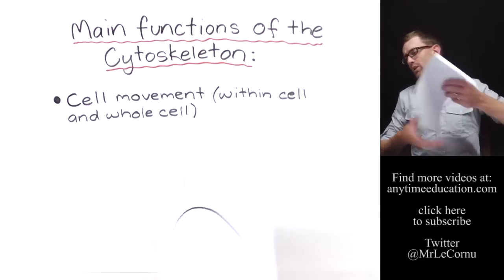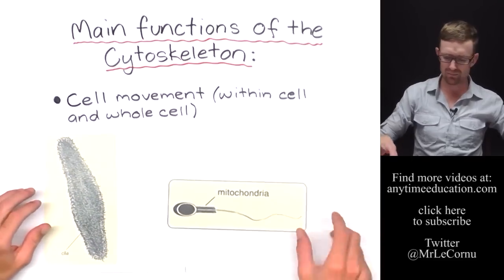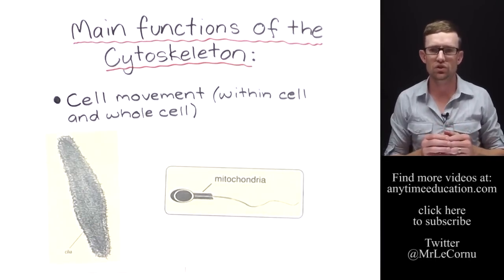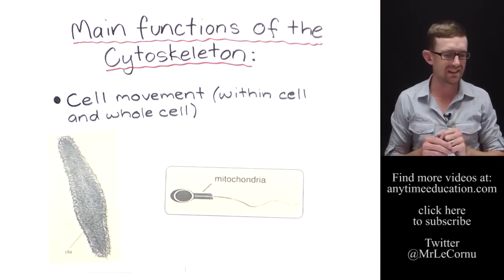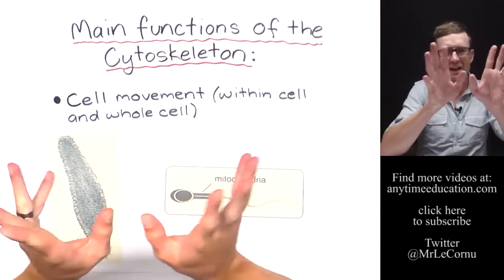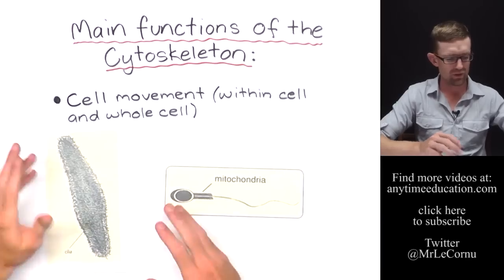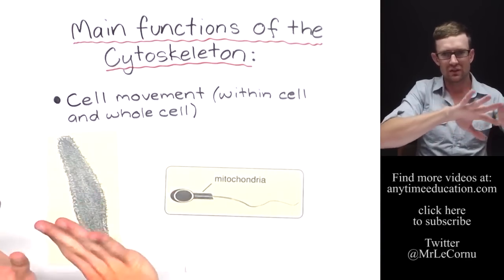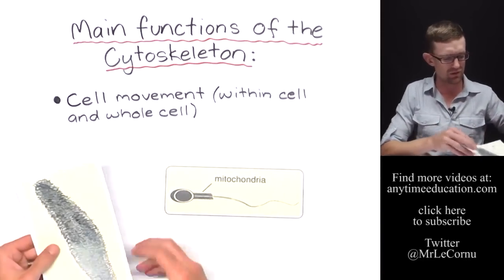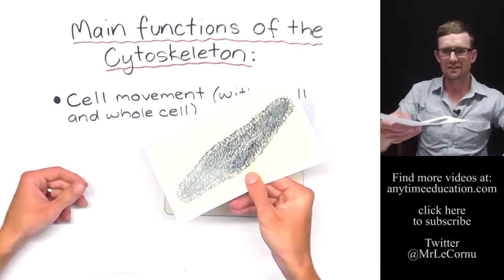And then the final example of whole cell movement due to the cytoskeleton is in cells like a paramecium or a sperm cell. This is a paramecium. It's a unicellular eukaryotic organism, only made of one cell. And all around its cell surface, it contains these things called cilia. Cilia are these hair-like protrusions that poke all outside of the exterior of this cell. And they all pulse in unison. They all move back and forward, back and forward. And so what that allows the cell to do is to move around all on its own, the whole cell moving around, thanks to the cytoskeleton.